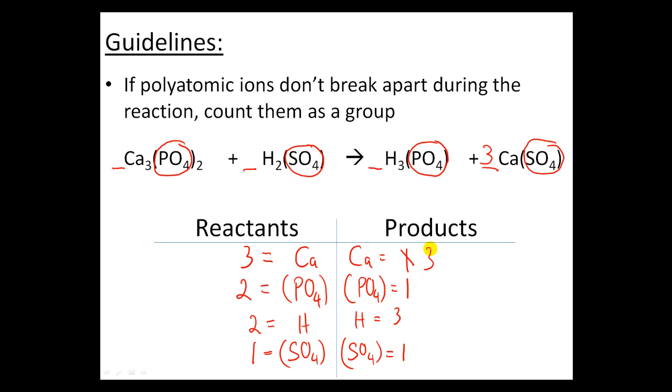By inserting the coefficient here I have changed everything so I need to recalculate again. So now I have three calciums and three sulfates. By putting this three here I don't affect any of these phosphates or hydrogens so I don't need to recalculate those.